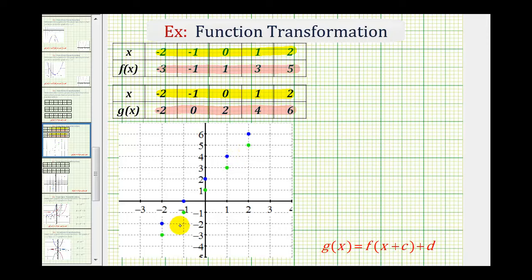So the green points represent f of x and the blue points represent g of x. And notice how each blue point is one unit higher than the green point.